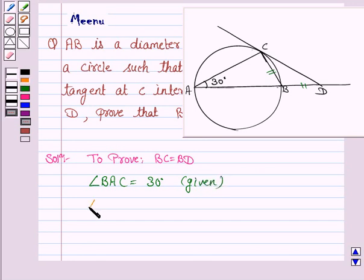Angle ACB is 90 degrees because it's an angle in semicircle. Now, let this be angle 1, this be angle 2, this be angle 3, this be 4.